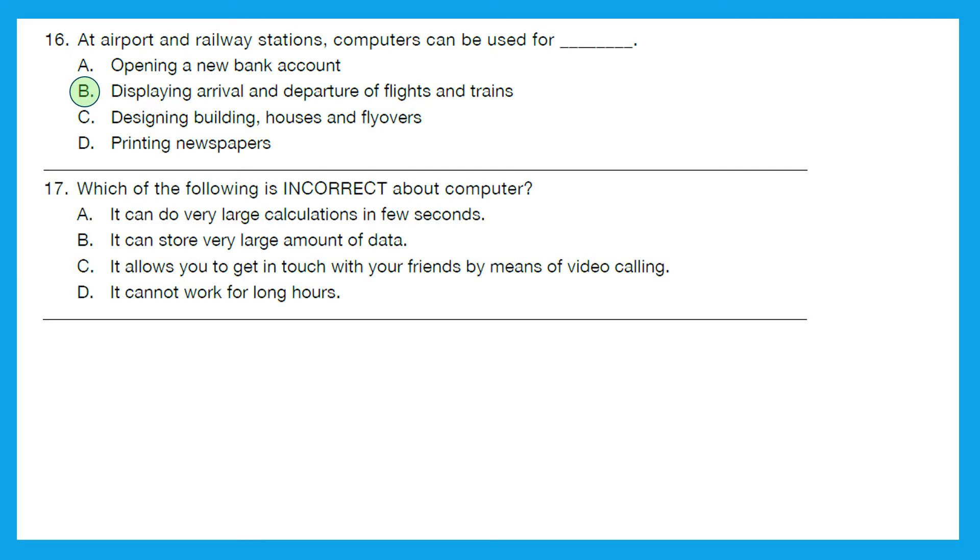Question 17: Which of the following is incorrect about computer? A: It can do very large calculations in few seconds - this is correct. B: It can store very large amount of data - this is also correct. C: It allows you to get in touch with your friends by means of video calling - this is also correct. D: It cannot work for long hours. Who said? This statement is incorrect. It can work for long hours. Option D is the right answer.